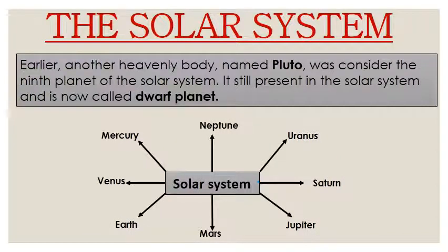Earlier, another heavenly body named Pluto was considered the 9th planet of the solar system. Pehle ek heavenly body jiska naam Pluto hai, usse bhi consider karte the as the 9th planet of the solar system. Ab solar system mein sirf 8 planets hain. Yeh abhi bhi solar system mein present hai, and now it is called a dwarf planet.